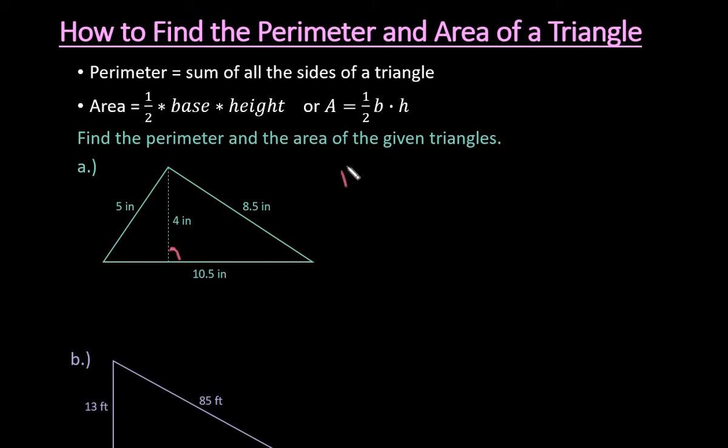The first one that we have, to find the perimeter, all I would do is go around the outside. Remember, perimeter is always the outside, and just add up all of the sides. The sum just means to add, so I would do 5 plus 8.5 plus 10.5.